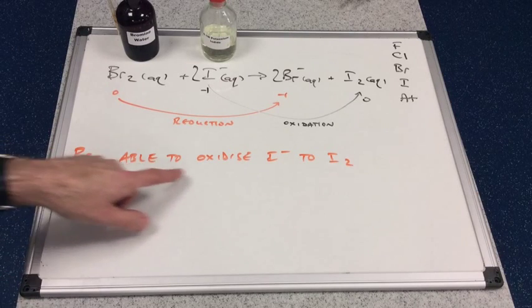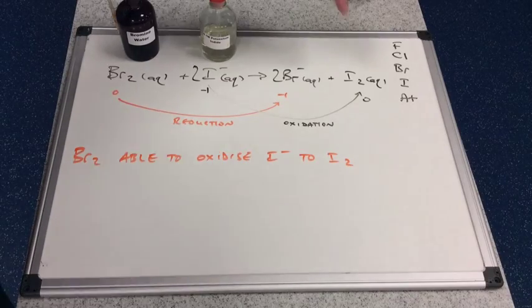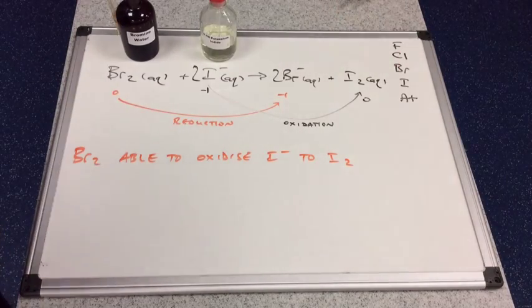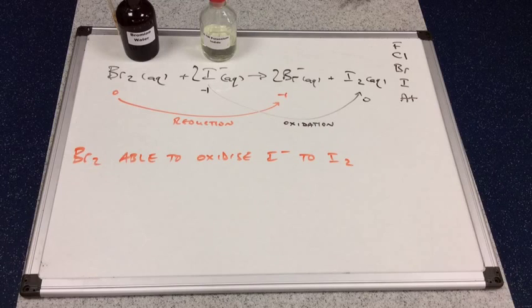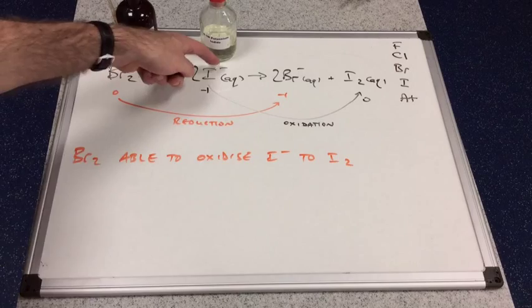So bromine is obviously able to oxidize I- to I2. And again look at the relative positions in the periodic table. Bromine is higher up the group than iodine, so it's going to have a smaller atomic radius, fewer shells, less shielding, greater attraction for this electron.